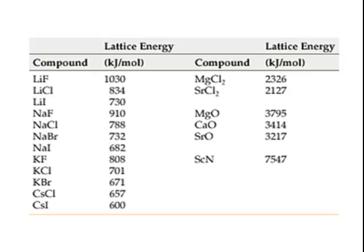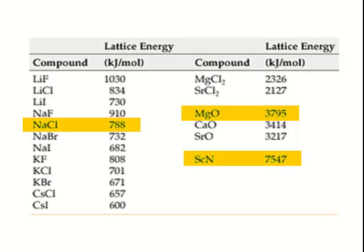The second pattern is related to the charge of the ions. The bigger the charge on the ions, the more difficult it is to separate them. Compare the lattice energy of three different salts: sodium chloride, magnesium oxide, and scandium nitride. Sodium chloride has ion charges of plus 1 and minus 1. Magnesium oxide has ion charges of plus 2 and minus 2, and therefore it has a higher lattice energy. Scandium nitride has ion charges of plus 3 and minus 3, and its lattice energy is considerably higher yet.